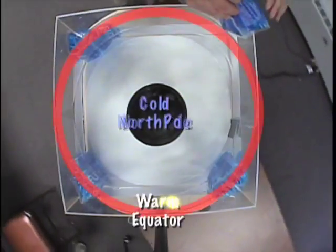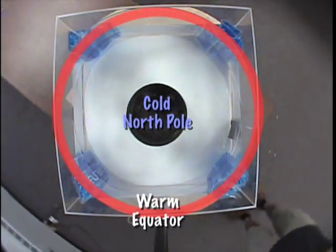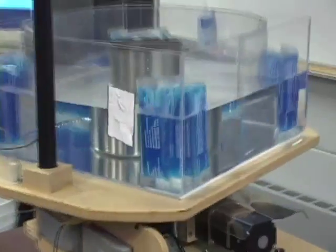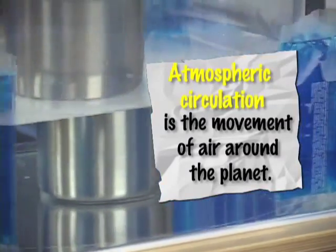So I put a lot of ice in the middle. I have these heat packs representing warmer subtropics. Essentially we will be seeing the circulation pattern coming out of temperature difference.